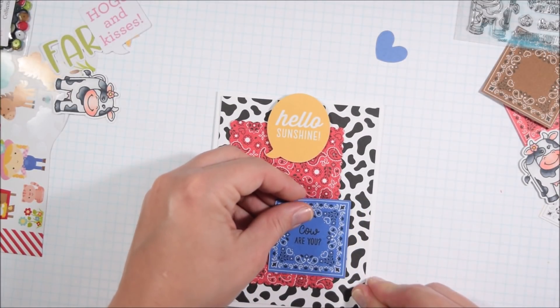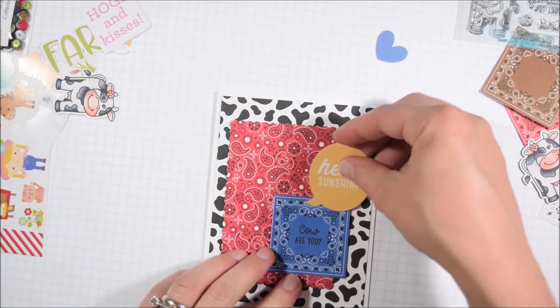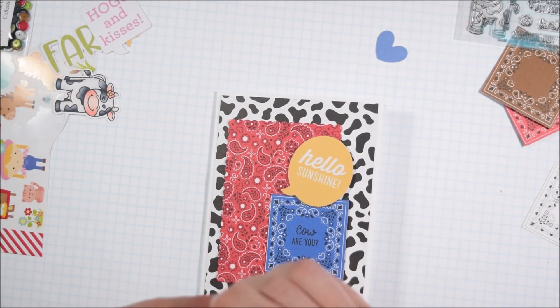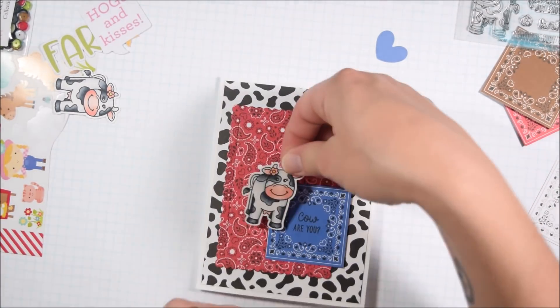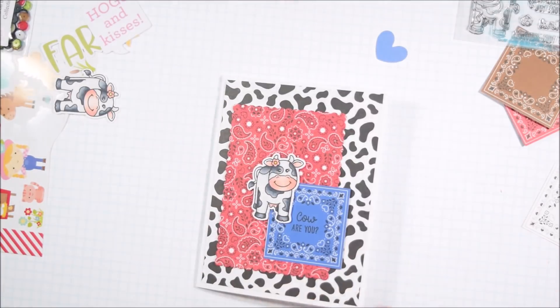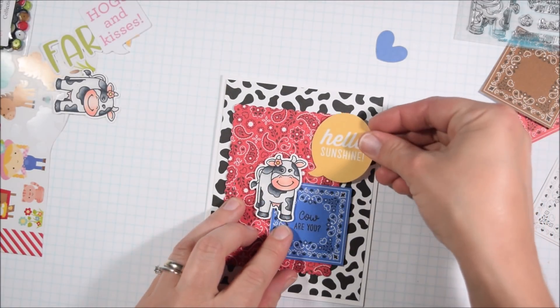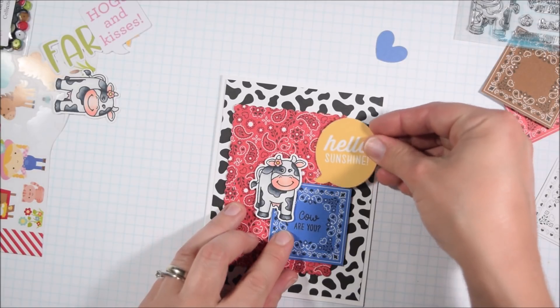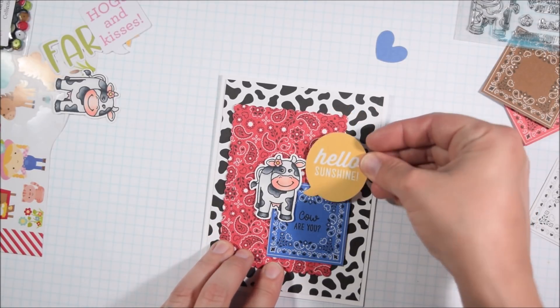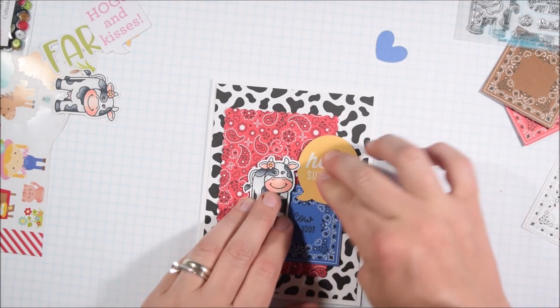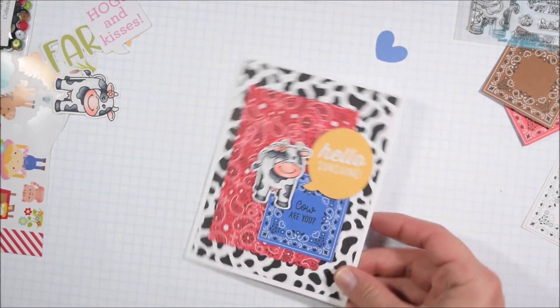I put the cow are you sentiment onto one of those little bandana pieces that I mentioned earlier, because they work great for sentiments as well. And now I'm going to combine these three little pieces. So it will say, hello, sunshine, cow are you? And I thought that was a fun little punny way of doing it and also helped me to combine some of the elements that I had created or that had come with the kit.